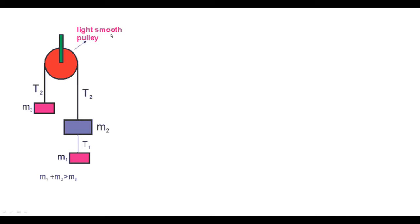There is a light smooth pulley with a string passing over it, connecting two blocks with masses m2 and m3. Another string connects a block of mass m1 with the block of mass m2. Given that m1 plus m2 is greater than m3, and the pulley is light and smooth, meaning the mass of the pulley can be neglected and there is no friction.